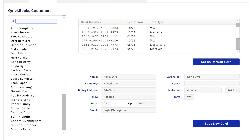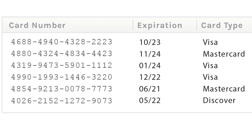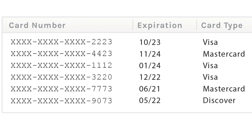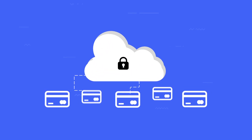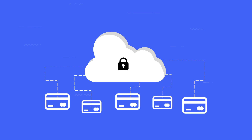Through our PCI-compliant security, eBizCharge tokenizes and secures customer credit card information and reduces your liability with off-site data storage.